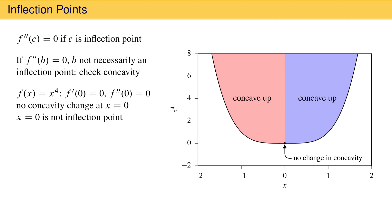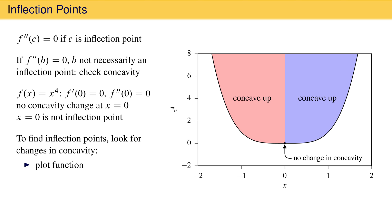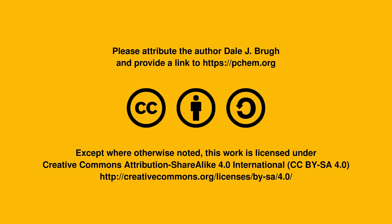The second derivative will always be 0 at an inflection point, but an inflection point is not required to exist if you find a point at which the second derivative is 0. To find an inflection point, you must investigate the concavity of a function on either side of a suspected inflection point. One way to do this is to plot the function. Another way is to find points at which the second derivative is 0 and then evaluate the second derivative on both sides of those points to be sure the concavity changes. If it does, you have found an inflection point; if it doesn't, you have not. And that's concavity and inflection points.